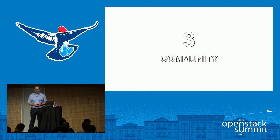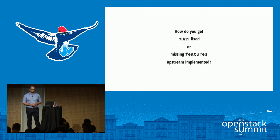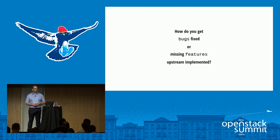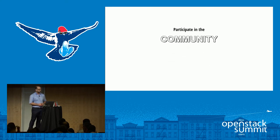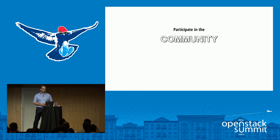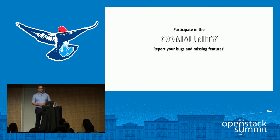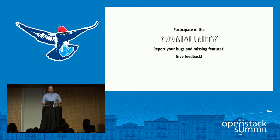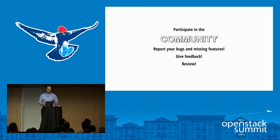Another topic to consider is the community if you use vanilla. You need to think about how to fix bugs you find and how to add features that are not currently implemented upstream. You should simply participate in the community — that would be the only way with vanilla. That means reporting your bugs and findings, reporting missing features, opening blueprints, giving feedback, and reviewing what other people do. Without that, you will fail with running vanilla OpenStack.